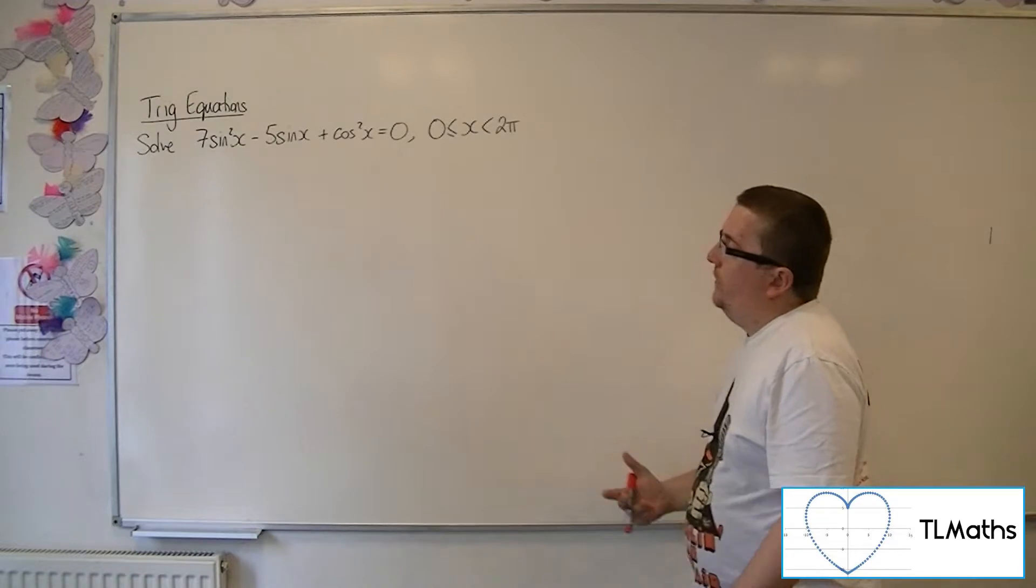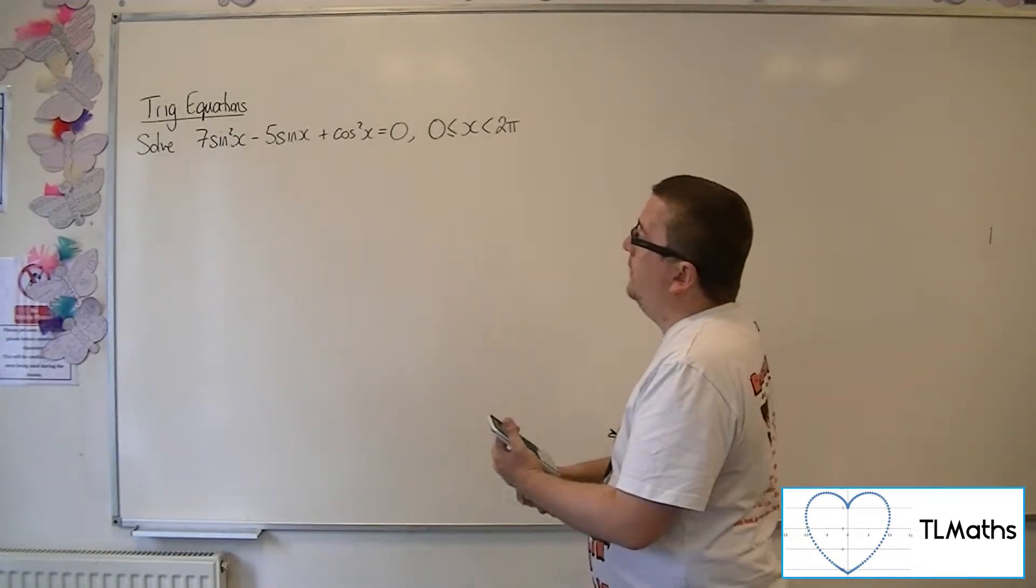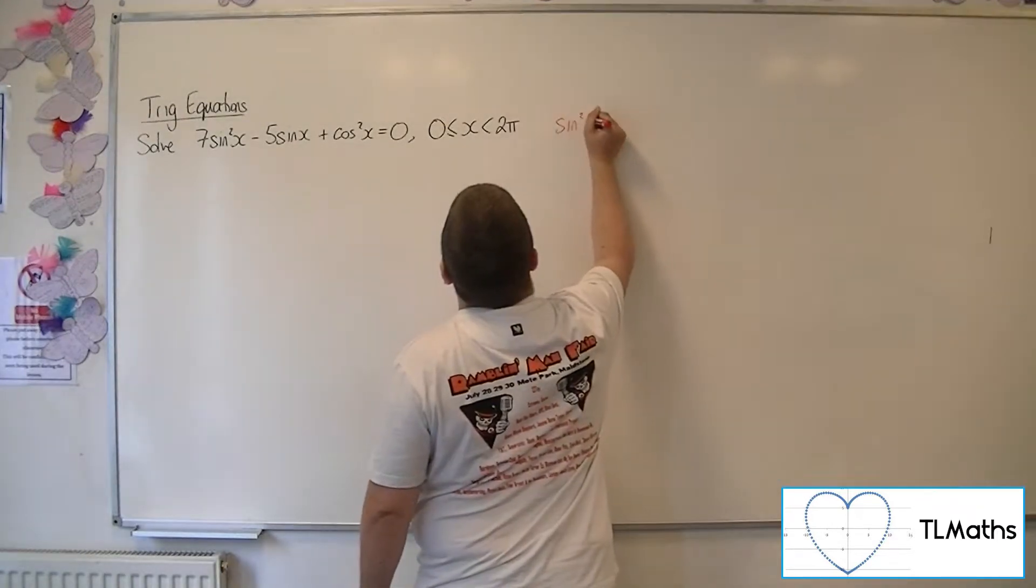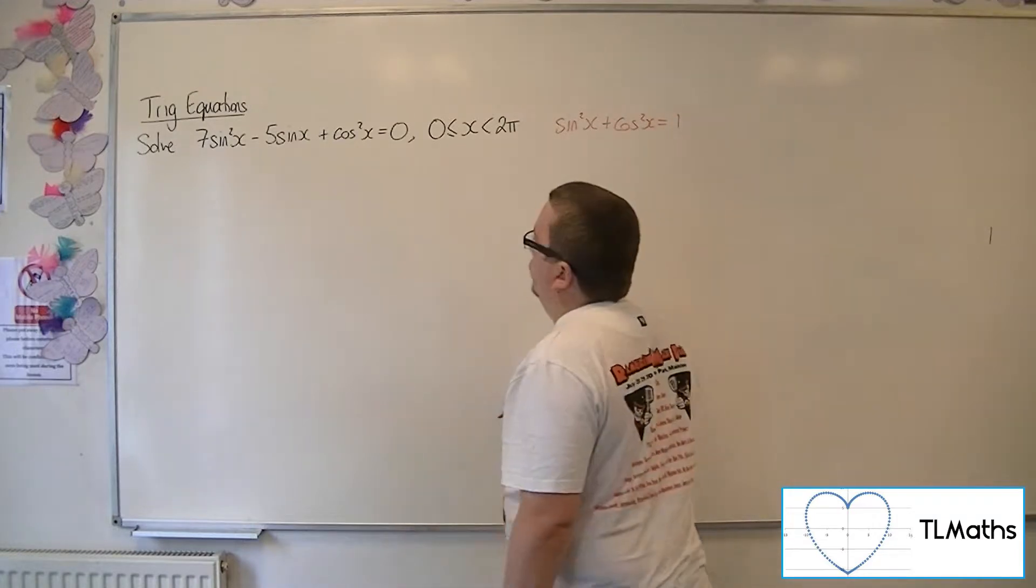Because we've got these quadratics, the sine and cosine, it makes sense to write down our trigonometric identity: sin²x + cos²x = 1.